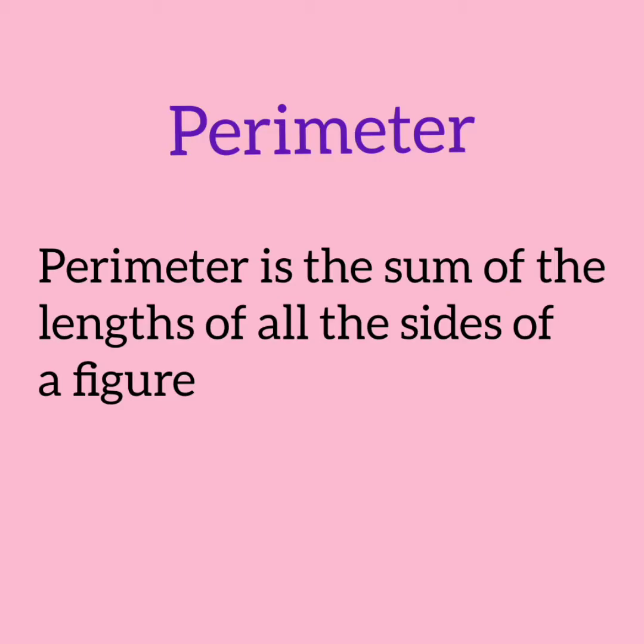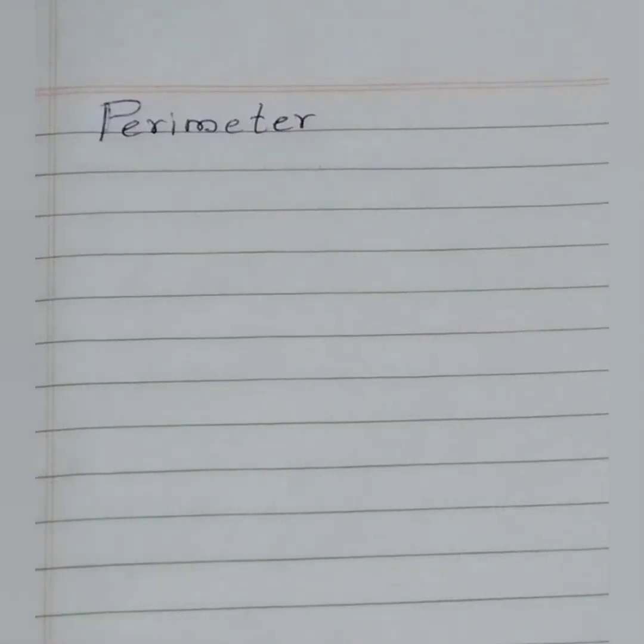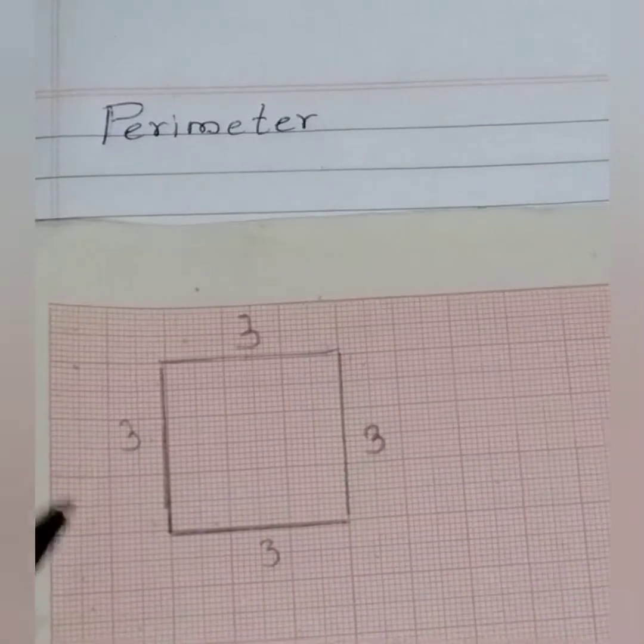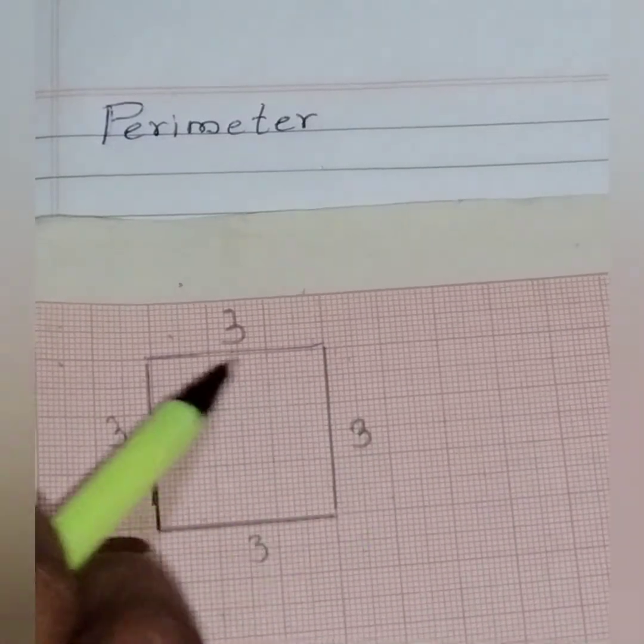In this video, I will show the perimeter and area using a graph paper, which you will understand very easily. Look at the graph paper — each thick line is drawn with the measurement of 1 cm. More about graph paper you will learn in your higher classes. Now, coming to perimeter: it is the sum of the lengths of all the sides of a figure. Here, I have drawn a square in the graph paper to explain the perimeter.